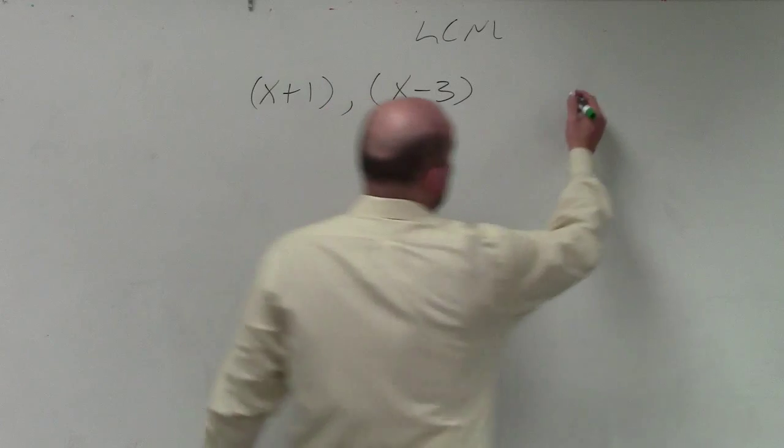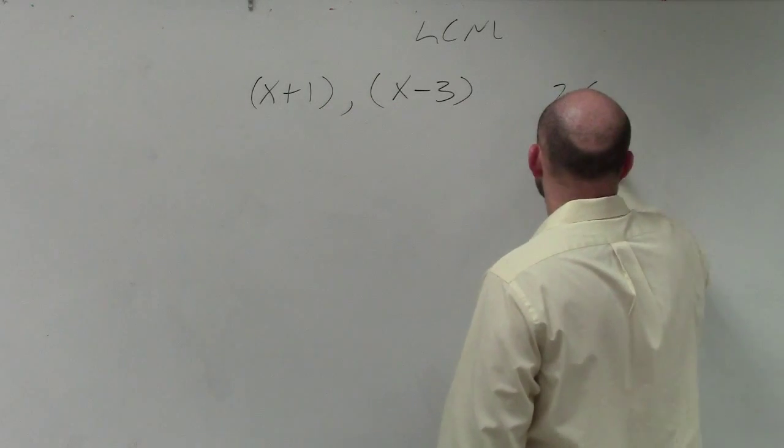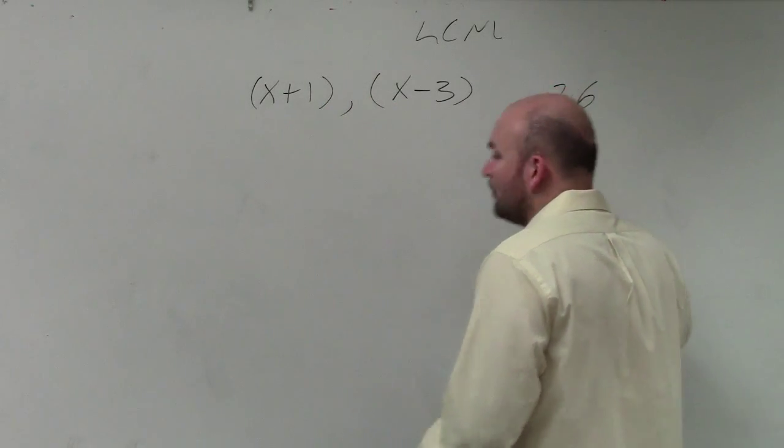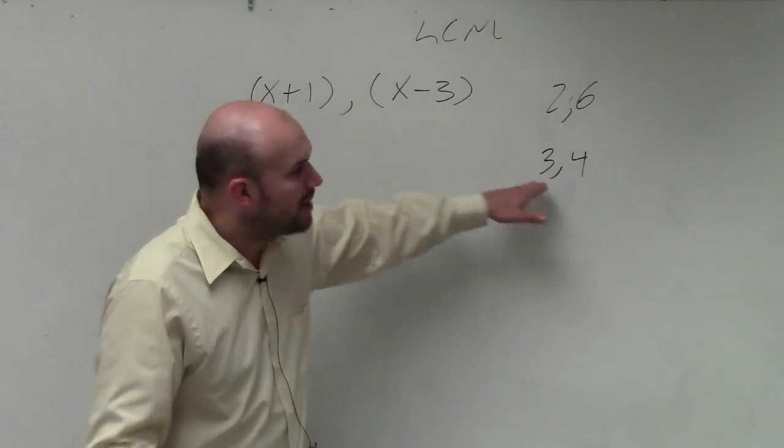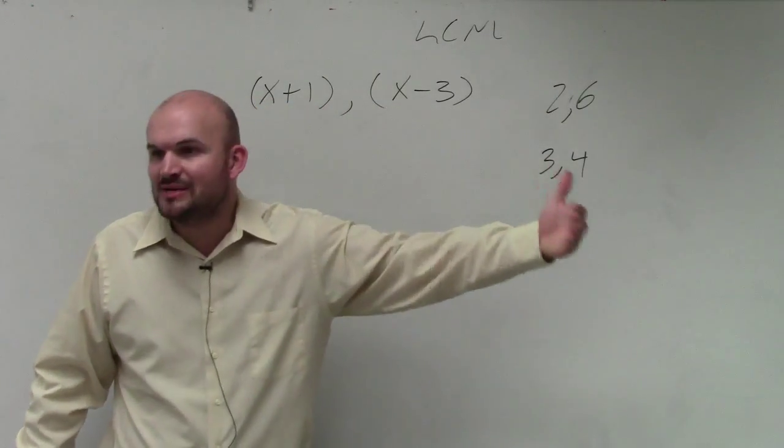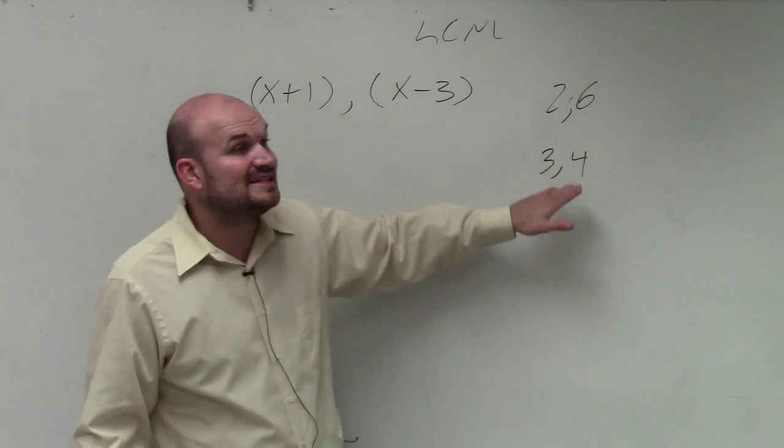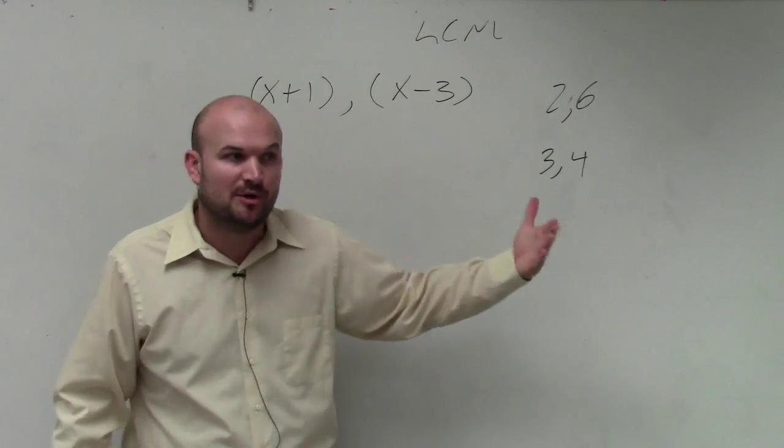But if I remember my case of 2 and 6 and 3 and 4, what I remember is the product of my two factors always gives me a common multiple. It doesn't always give me the least common multiple, but it gives me a common multiple.